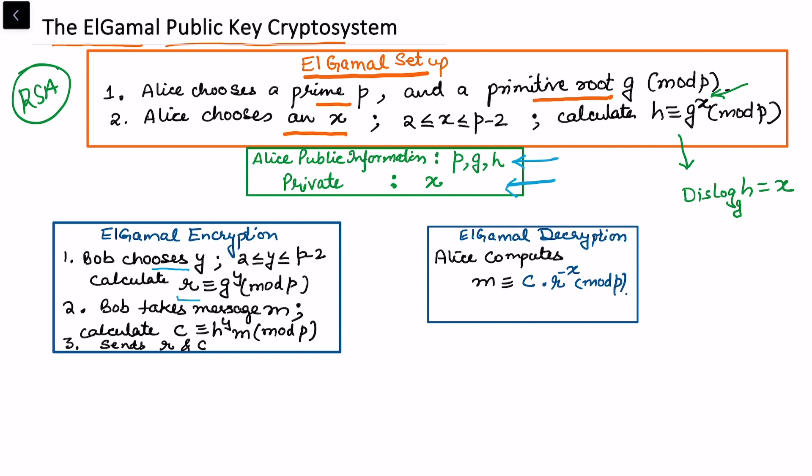And calculate r. You may treat it like r is again a discrete log problem. The index of r, or the discrete log of r, is this exponent y. Now Bob takes the message m and then calculates c = h^y multiplied by m. So Bob sends r and c to Alice.